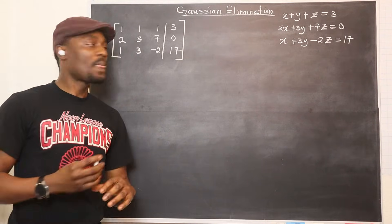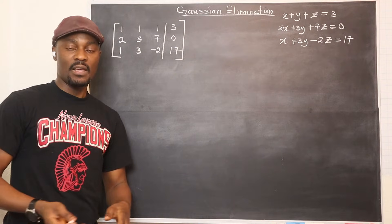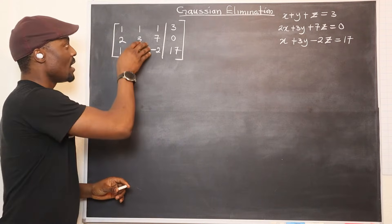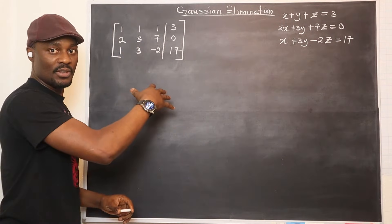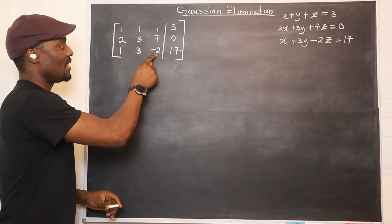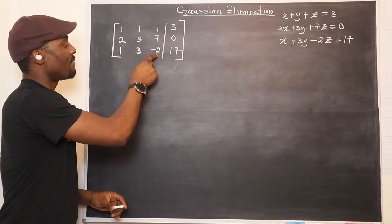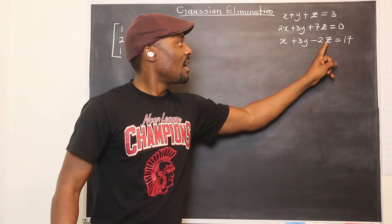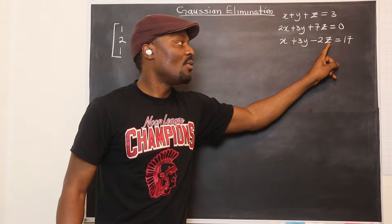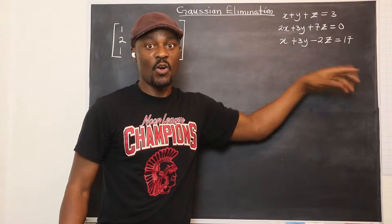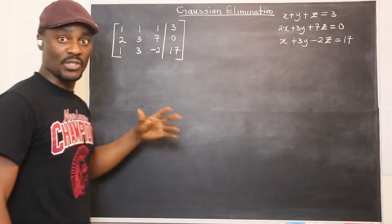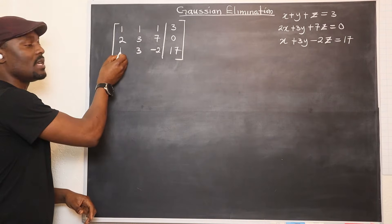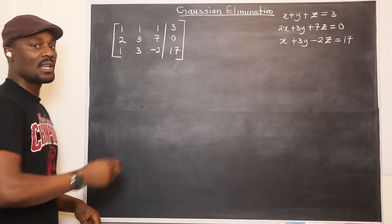Now, what do you do with the Gaussian elimination technique? What you do is you try to create a situation where you eliminate some of these terms, but you end up with this being alone. Whatever is here is alone, so whatever is here will be equal to this. It will look like one Z equals whatever number is here. All these numbers are going to change as we start the process. The first thing you want to do is create a zero here — make sure this becomes a zero.